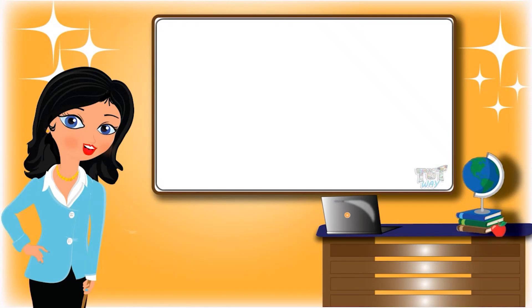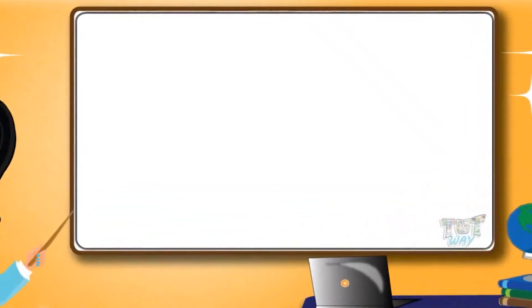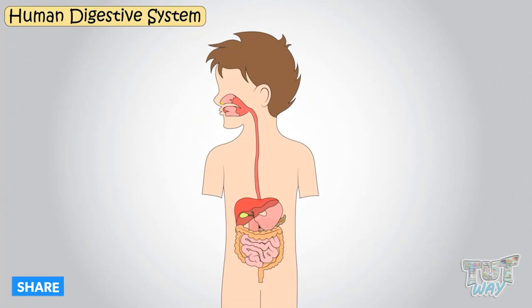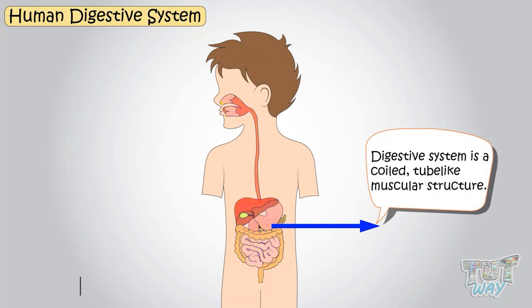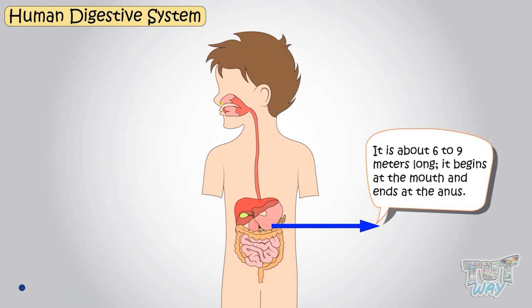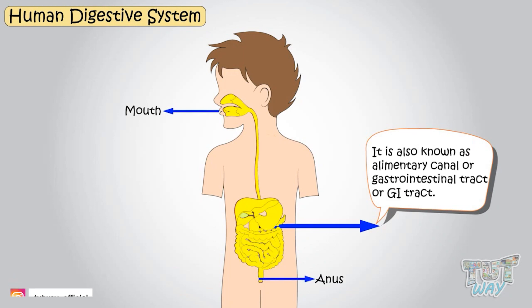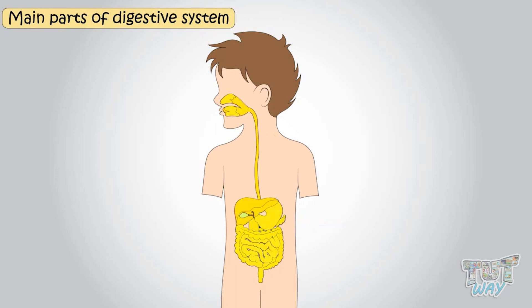Hi kids! Today we will learn what are the main parts of the digestive system. So let's get started. Kids, we know the digestive system is a coiled tube-like muscular structure which is about six to nine meters long. It begins at the mouth and ends at the anus. It is called the alimentary canal and also gastrointestinal tract or GI tract. Now we are going to learn the main parts of the digestive system.